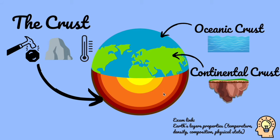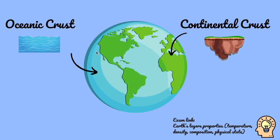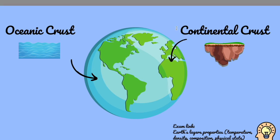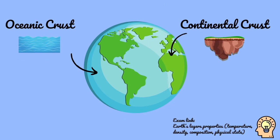At the convergent plate boundary, when these two different types of crust meet, the properties within them play an important role in the formation of our tectonic hazards. The oceanic crust is found below the oceans, and the continental crust is found below the continents or land on earth. A really easy way to remember the difference: continental has 'continents' in the name, and oceanic has 'oceans' in the name.